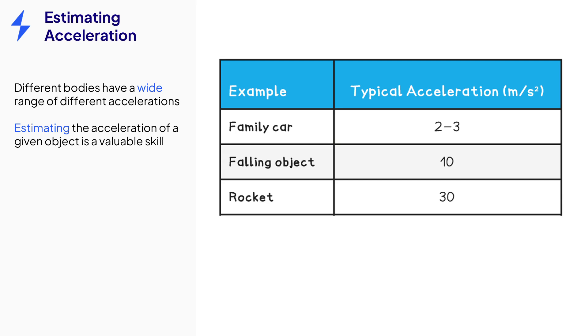A rocket has an acceleration of 30 meters per second squared. A formula one car is around 50 meters per second squared. And to achieve accelerations of above 100 meters per second squared, you would need to be in a fighter jet.